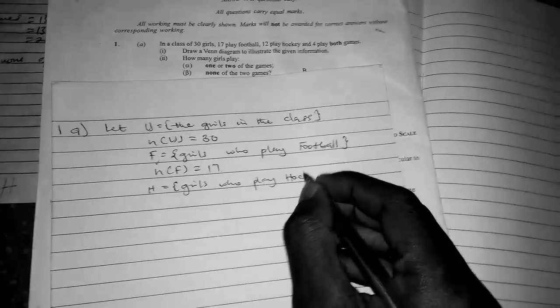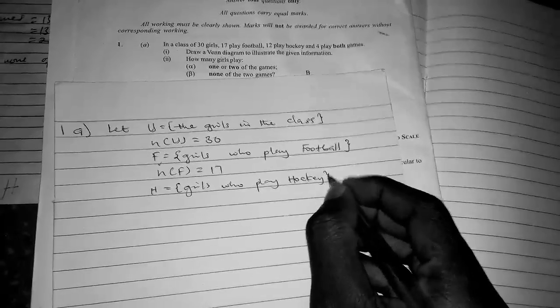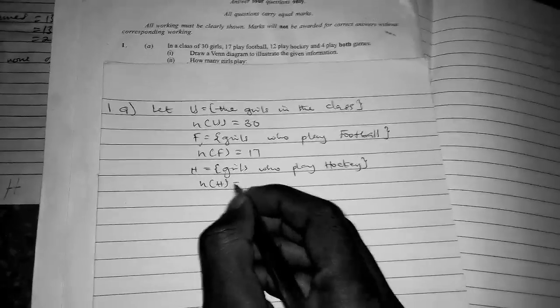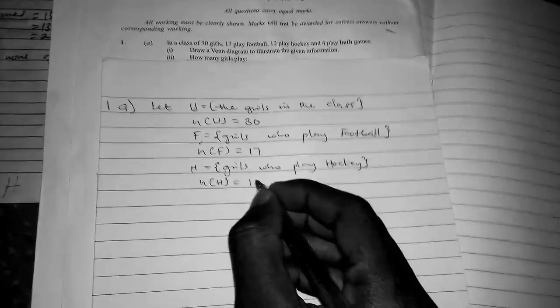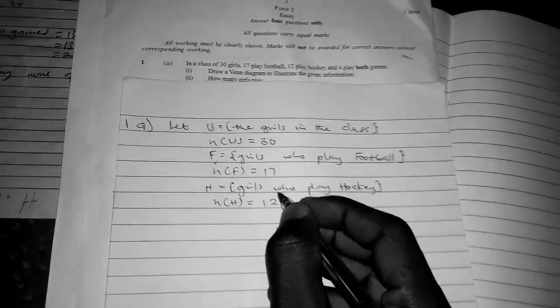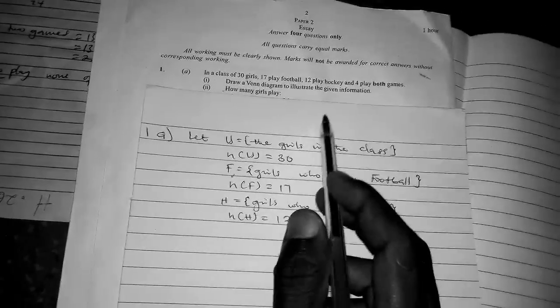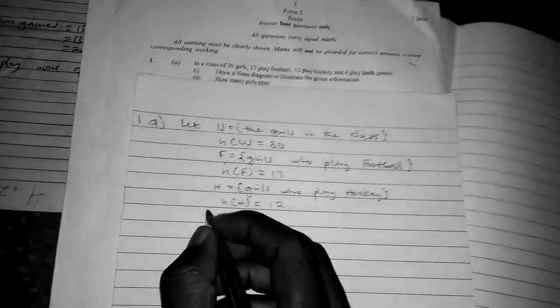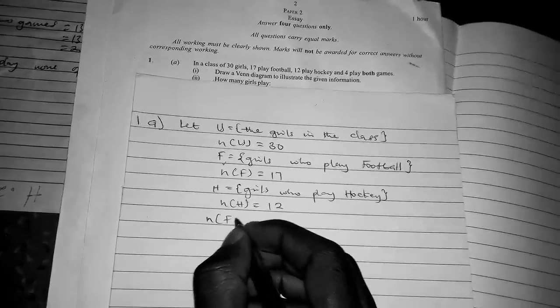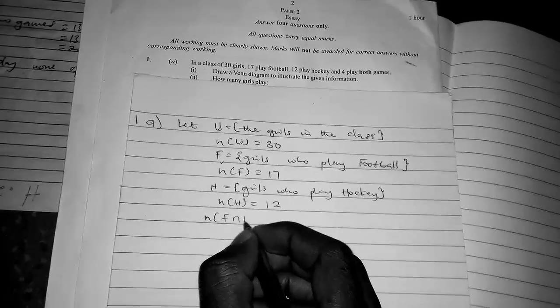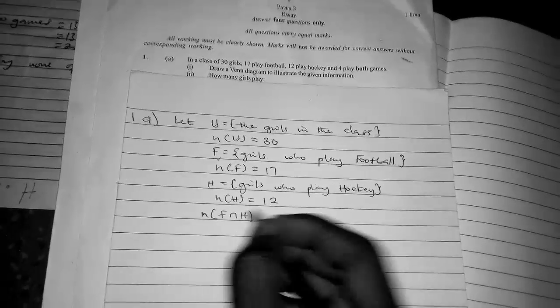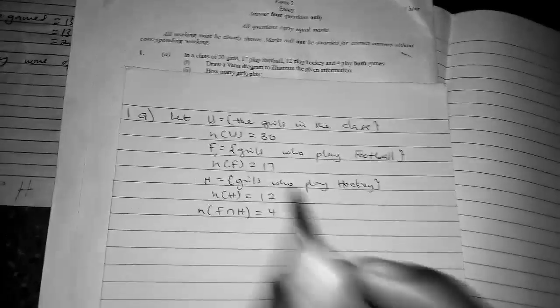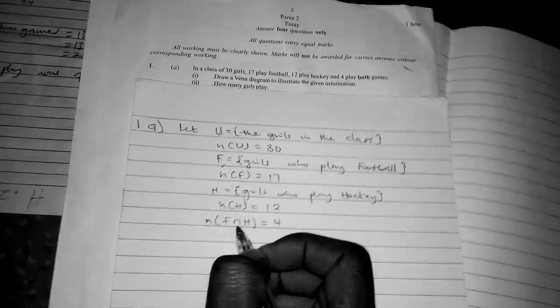We have H = girls who play hockey, so n(H) = 12. Now the next one: 4 play both games. Those who play both games is n(F ∩ H) = 4. F ∩ H means the set of those who took part in both activities.